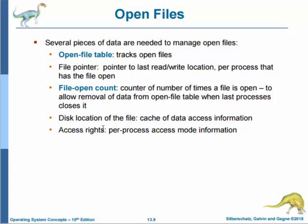For the location of the file, most file operations require the system to read or write data, and the information needed to locate the file can be on a file server across the network, on mass storage, or on a RAM drive. This information is kept in memory so the system does not have to read it from the directory structure for each operation. Finally, we have access rights, wherein each process opens a file in an access mode, and this information is stored in the per-process table so the operating system can allow or deny subsequent I/O requests.